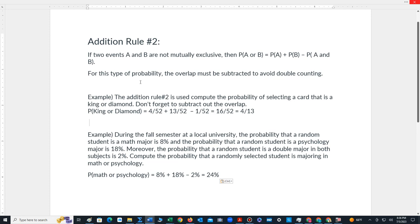If two events A and B are not mutually exclusive, then the probability that A or B occurs is equal to the probability that A occurs plus the probability that B occurs minus the probability that A and B occur. A and B are basically the overlap or what is common between A and B because we have to avoid double counting in order to accurately compute the probability.